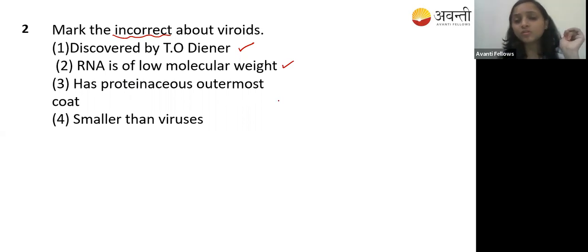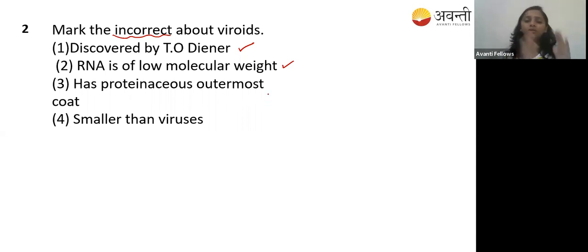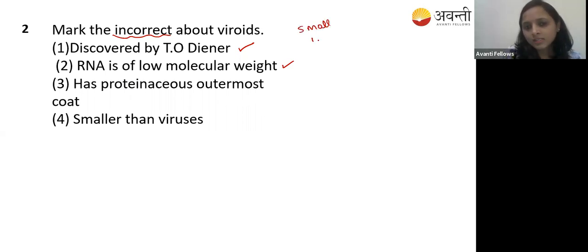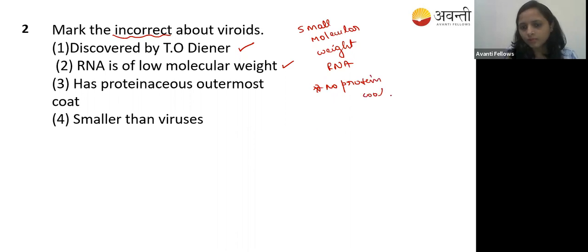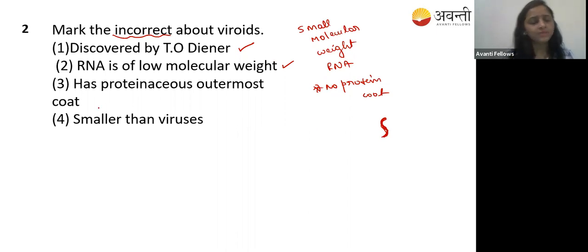Option three - has a proteinaceous outermost coat - no. If it has a proteinaceous coat it may be a virus. Viroids are small molecular weight RNA with no proteinaceous coat. Only RNA is there - no protein coat. These RNAs are infectious and will cause disease. So option two is also correct.